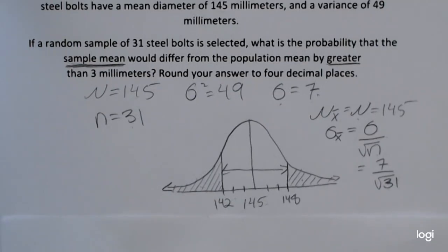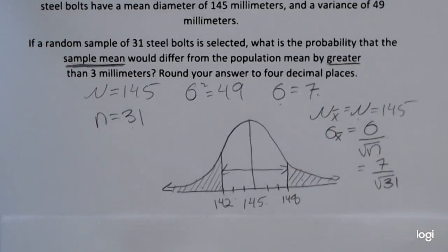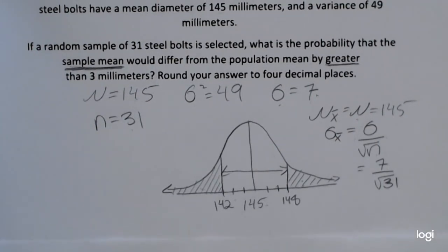Typically, the bell-shaped distributions associated with the sample mean are significantly smaller and tighter than that of the original population, if that original population is normally distributed.